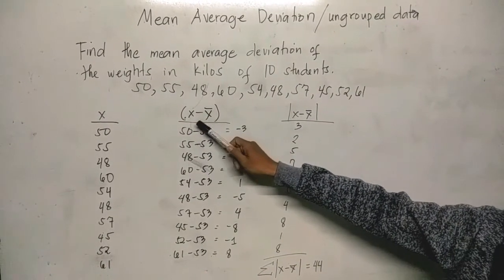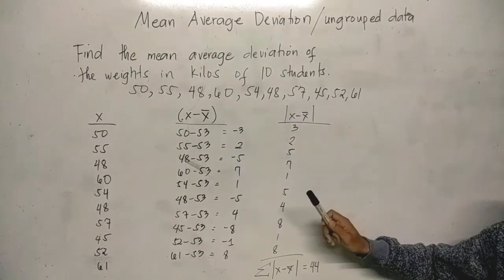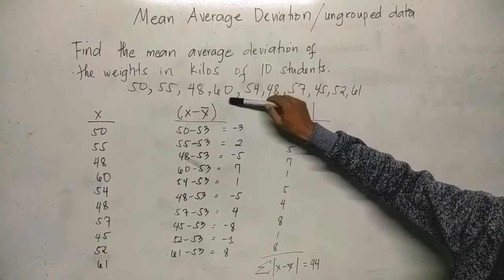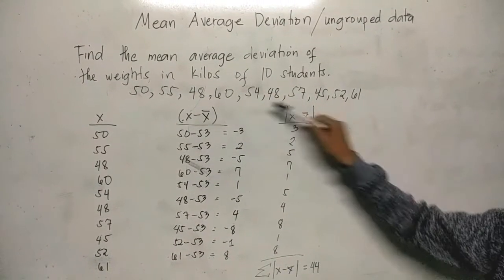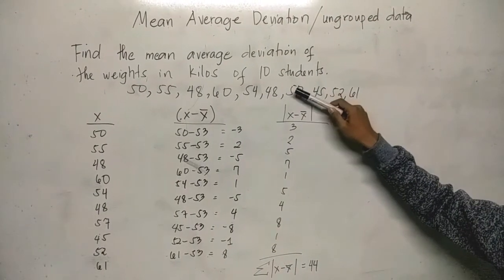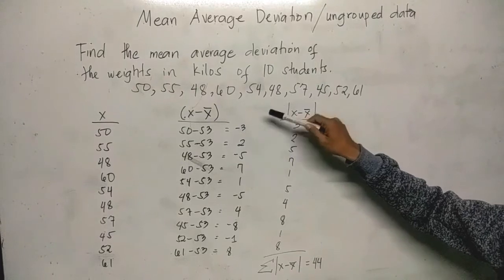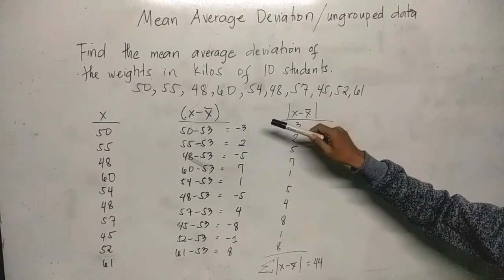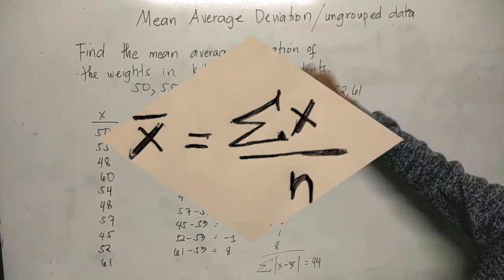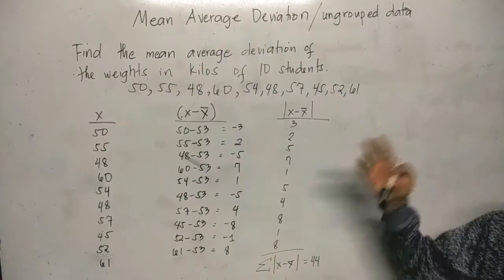Then we need to find the difference between the x and x bar or the mean of all scores. So this means we're going to find first the mean of these numbers or weights in kilos of the 10 students. In finding the mean, we have x bar equals summation of x over N, the number of individuals. The mean is 53.